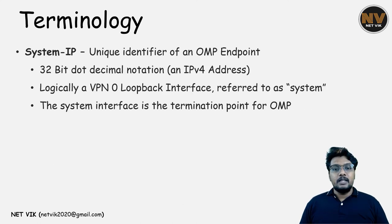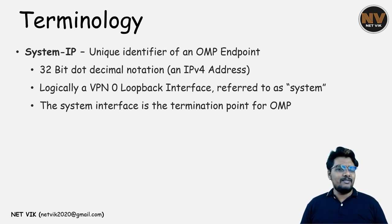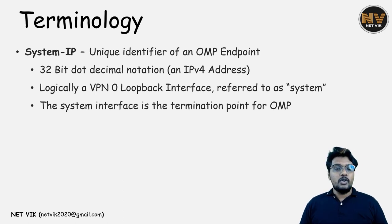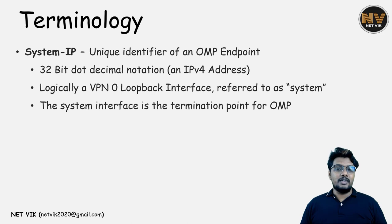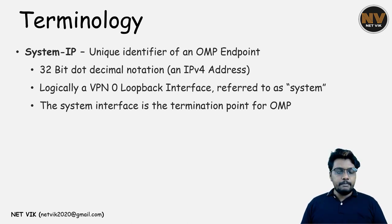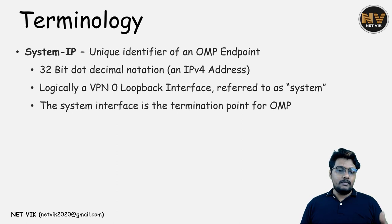System IP is nothing but a router ID for Cisco SD-WAN components. Every device — vManage, vSmart, vBond, and the vEdge routers — has a unique system IP assigned to it. If you are familiar with the router ID concept in OSPF, BGP, or any other routing protocols, this is the equivalent here. It is a 32-bit dotted decimal value that looks like an IP address. When an OMP neighborship is formed between a vEdge router and a vSmart, it is formed between these system IP addresses.